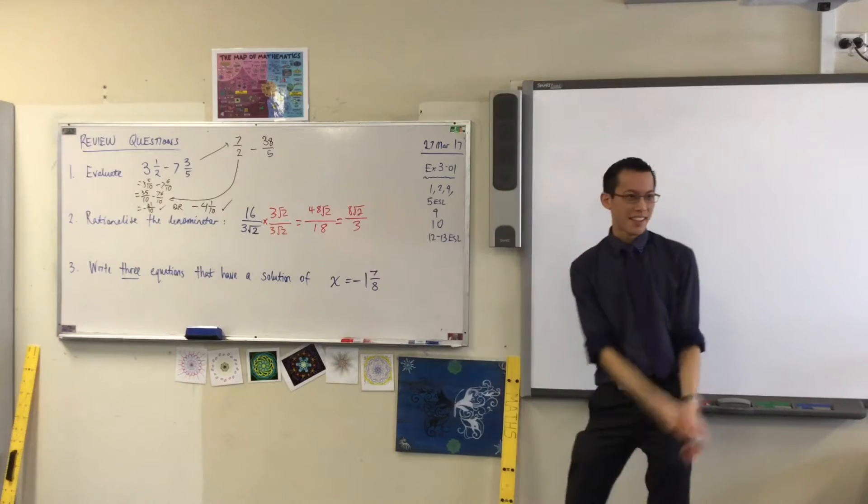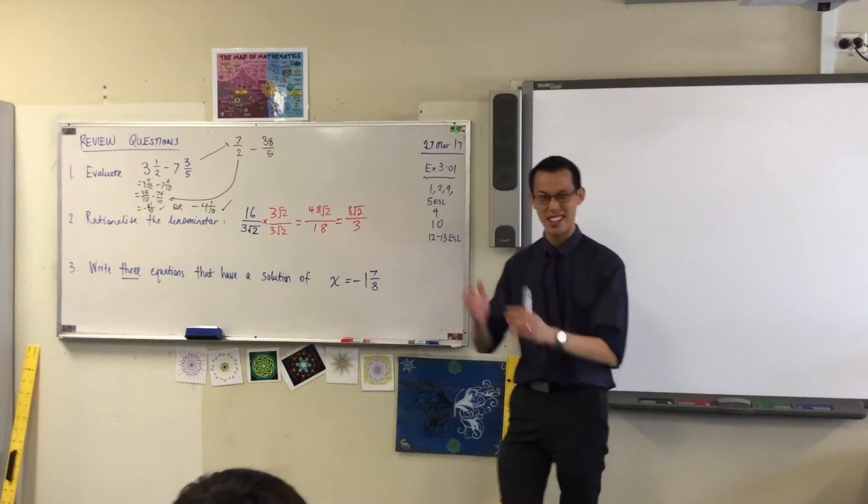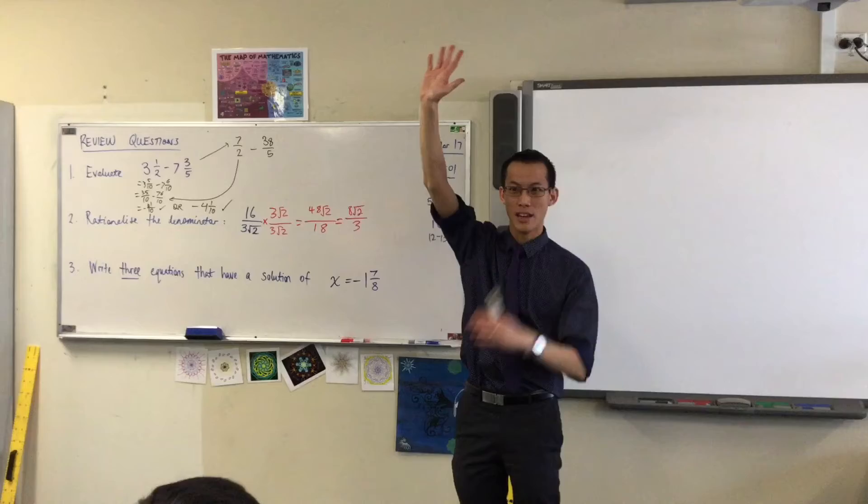Now, let's have a look. Here's a rationalized denominator. 8 root 2 on 3. Can I get a show of hands who agrees? Yes. Fantastic. Thank you. Hands down.